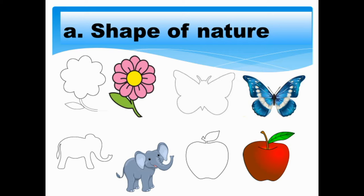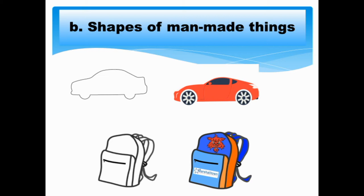Second, shapes of man-made things. Examples are cars, bags, shoes, or those things that you can find at home or in school. Everything that surrounds you has shapes.